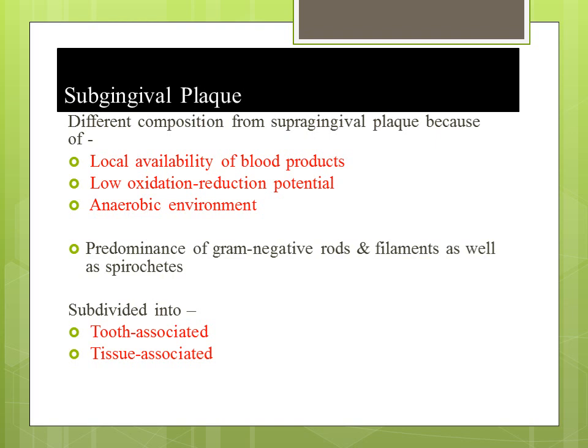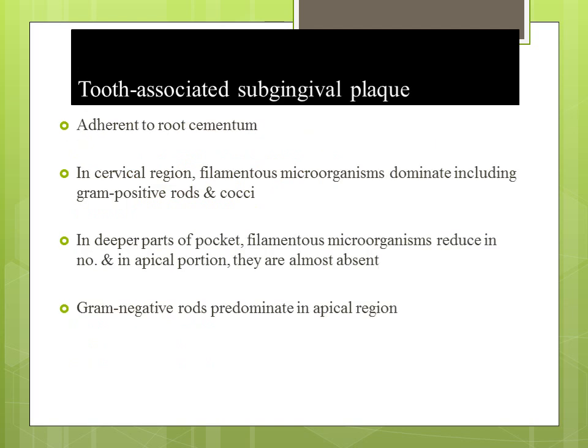The sub-gingival plaque is subdivided into tooth-associated or tissue-associated sub-gingival plaque. The tooth-associated sub-gingival plaque is adherent to root cementum. In the cervical region, it mainly consists of filamentous microorganisms including gram-positive rods and cocci. In the deeper parts of the pocket, filamentous microorganisms reduce in number, and in the apical portion they are almost absent, with gram-negative rods predominating mainly in the apical region.